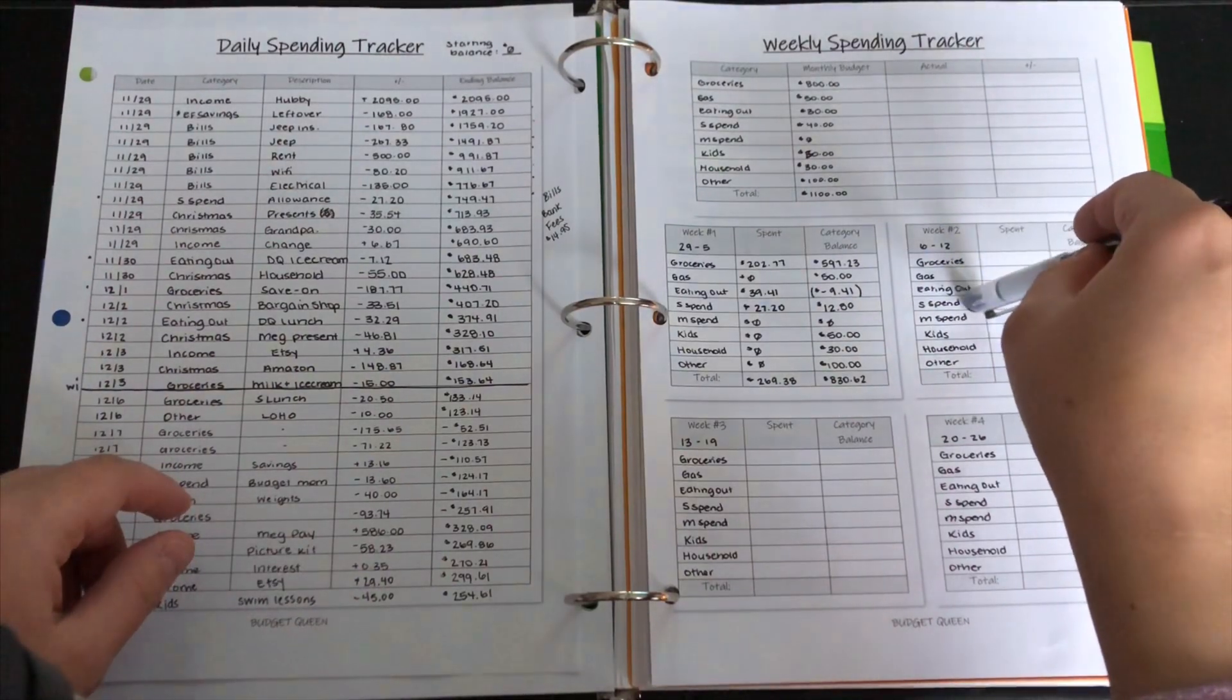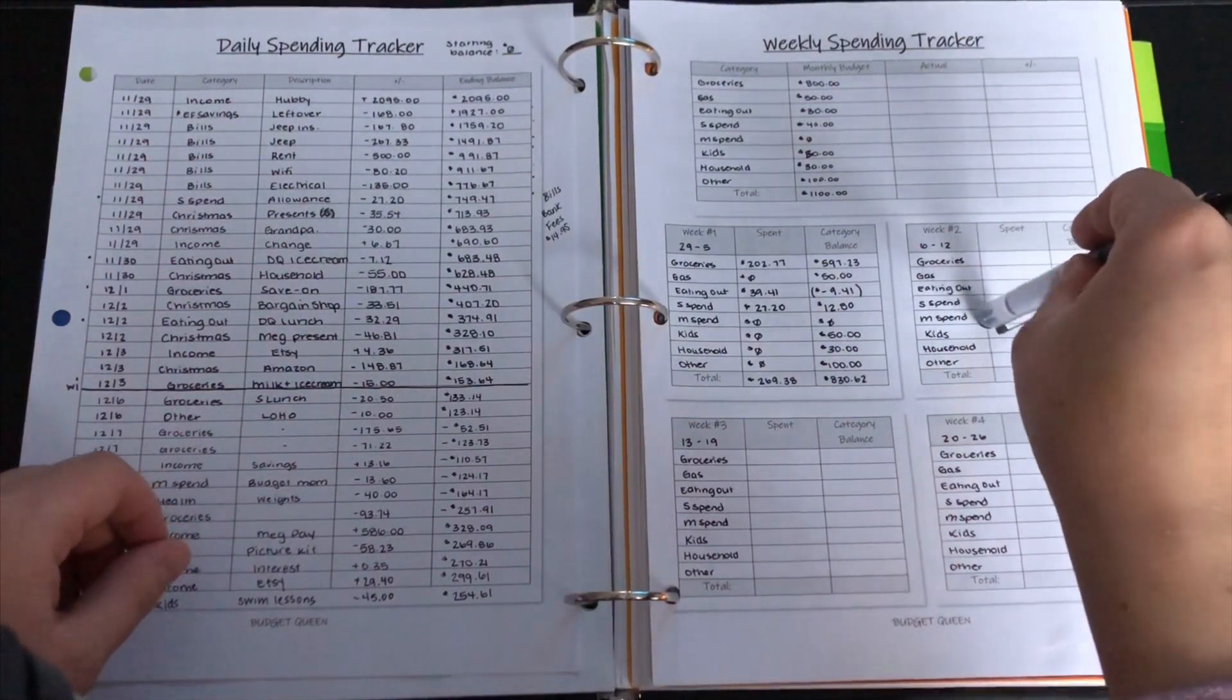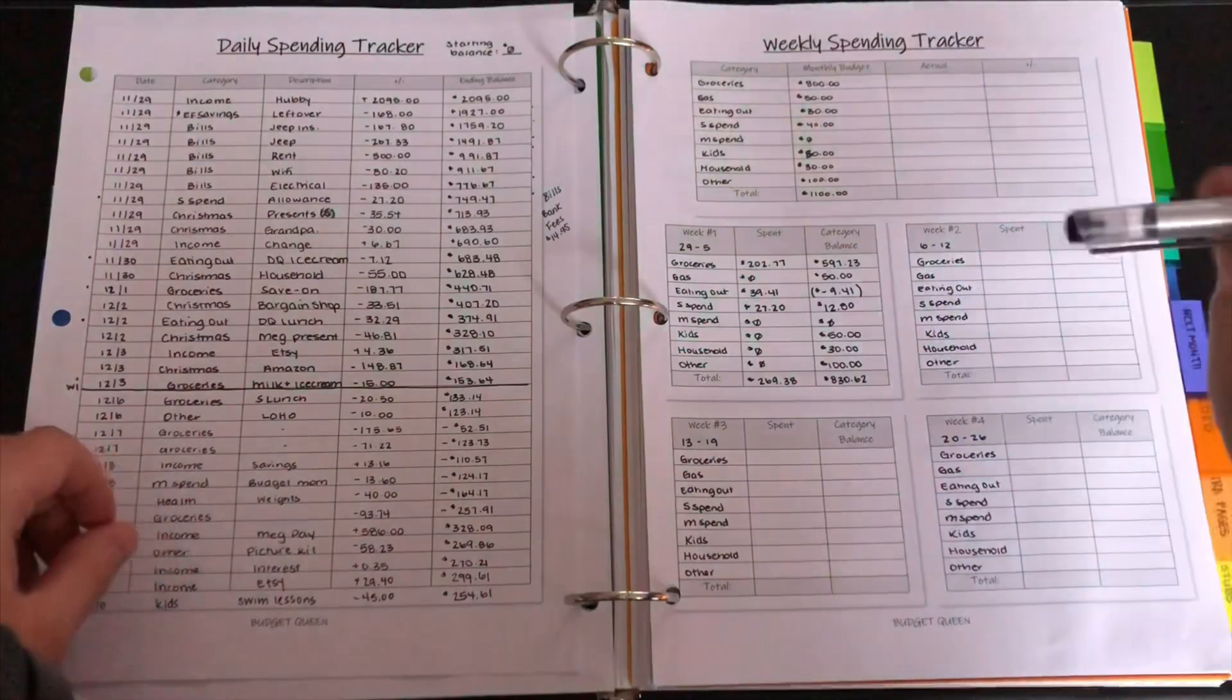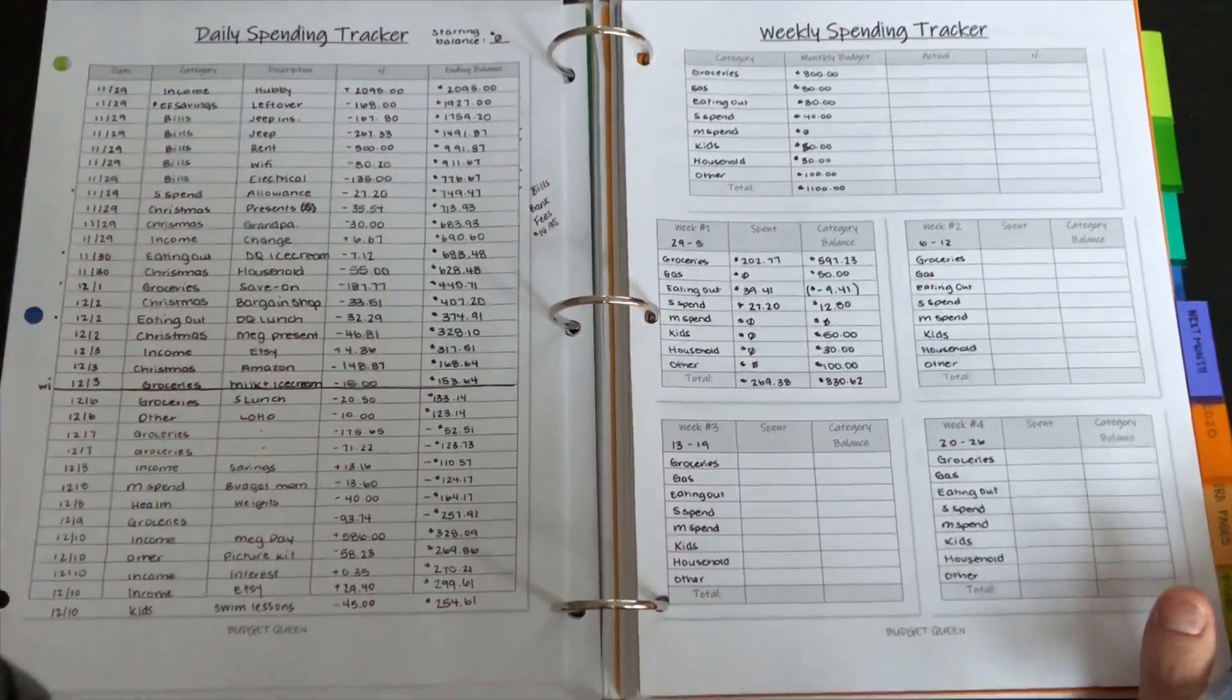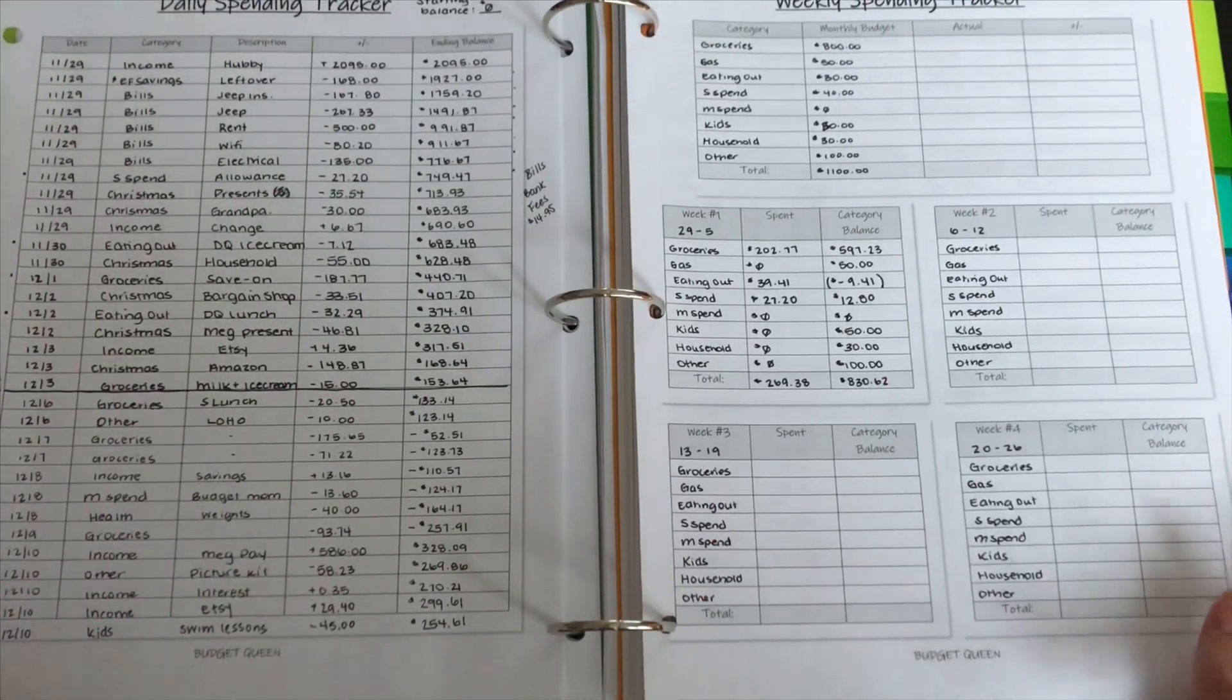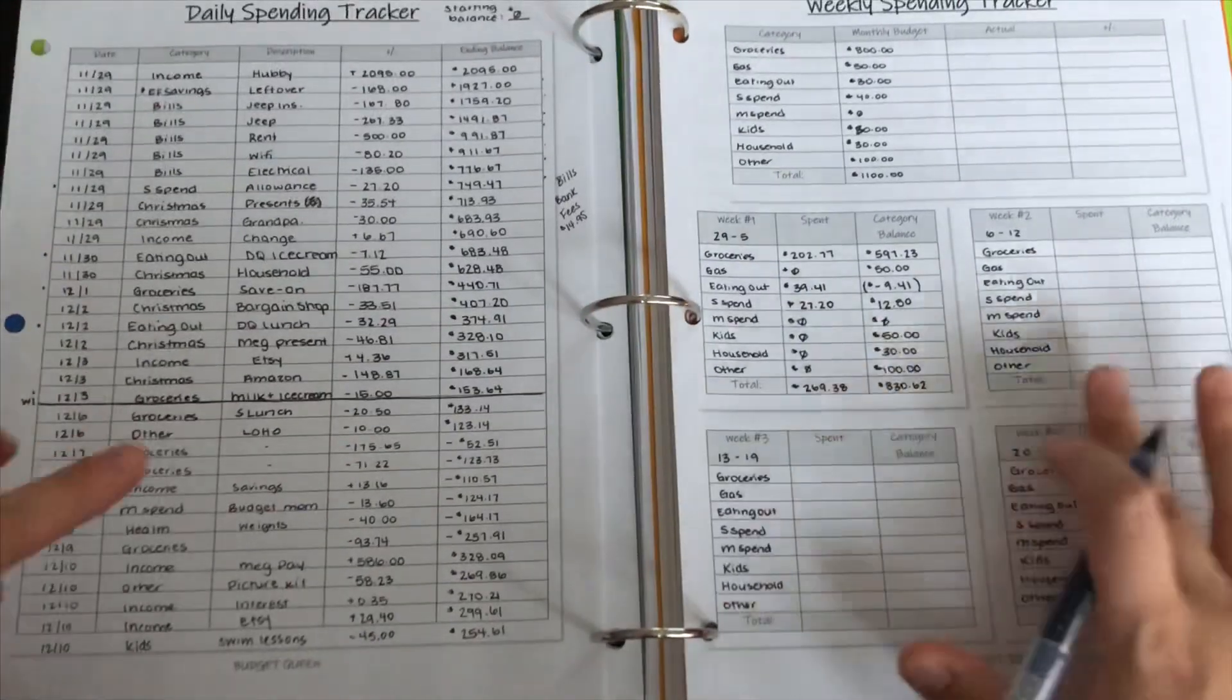So we have groceries, gas, eating out, my husband spending, my spending, kids, household, and other. So yeah, the first one is groceries. I'll try to zoom in just a little bit here. Sorry, it's like complete opposite.